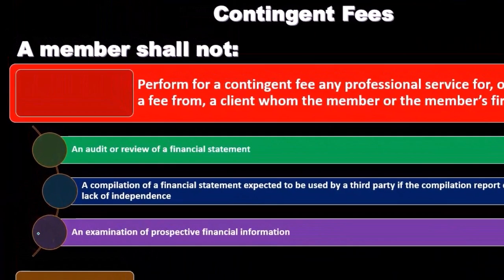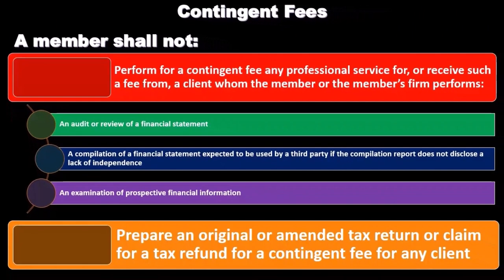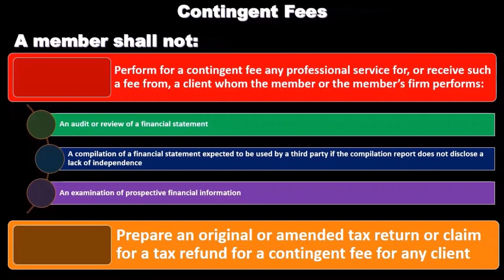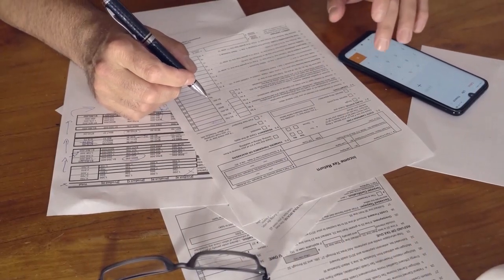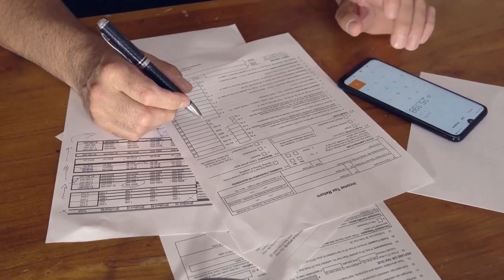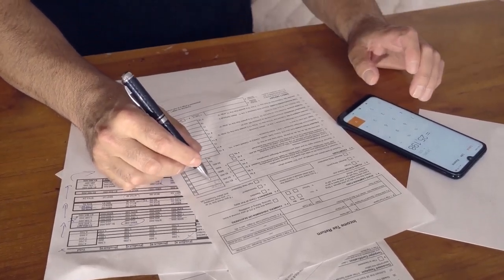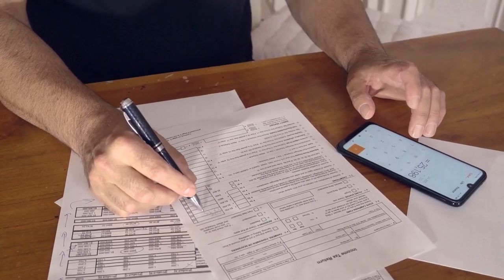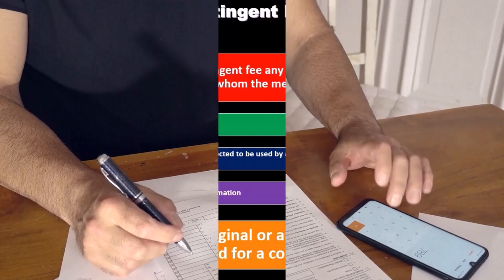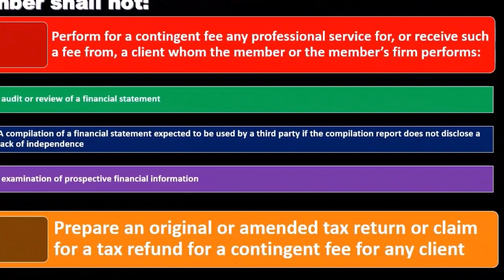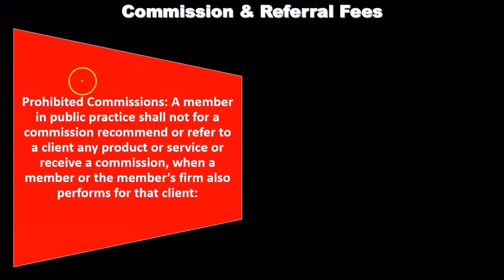This also applies to an examination of prospective financial information. Additionally, a member shall not prepare an original or amended tax return or claim for a tax refund for a contingent fee for any client. You can see how this would compromise the tax preparation process — for example, if the fee depended on the size of a refund or whether the client owes taxes — so we want to stay away from contingent fees in those areas.